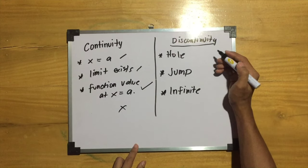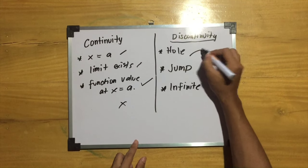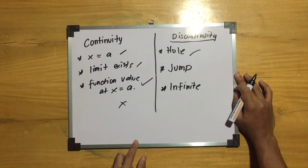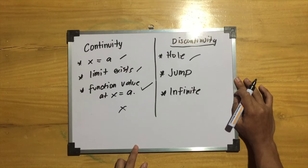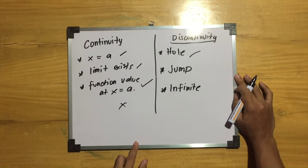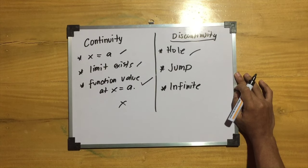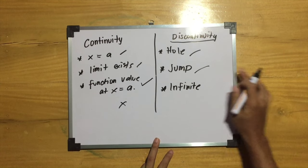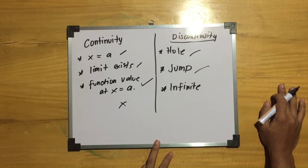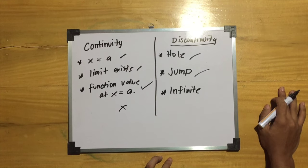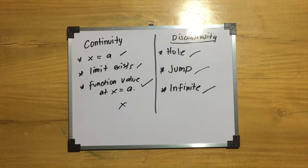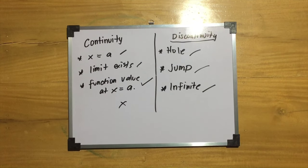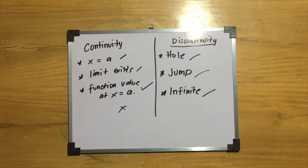There are 3 types of discontinuity. First is hole discontinuity, which happens when the limit exists but the function value at x equals a is different or does not exist. Second is jump discontinuity, which happens when the limits both exist but are different. Third is infinite discontinuity, which happens when the limits result in an infinity value, and can also be called asymptotic discontinuity.